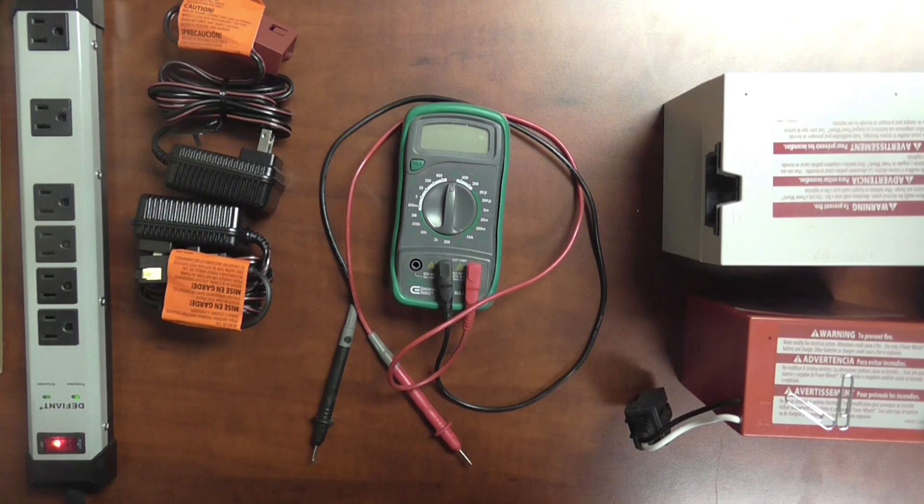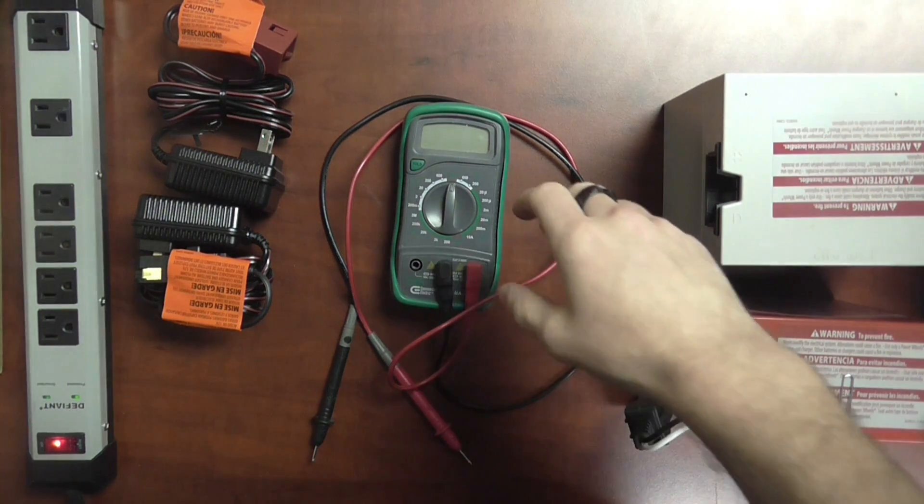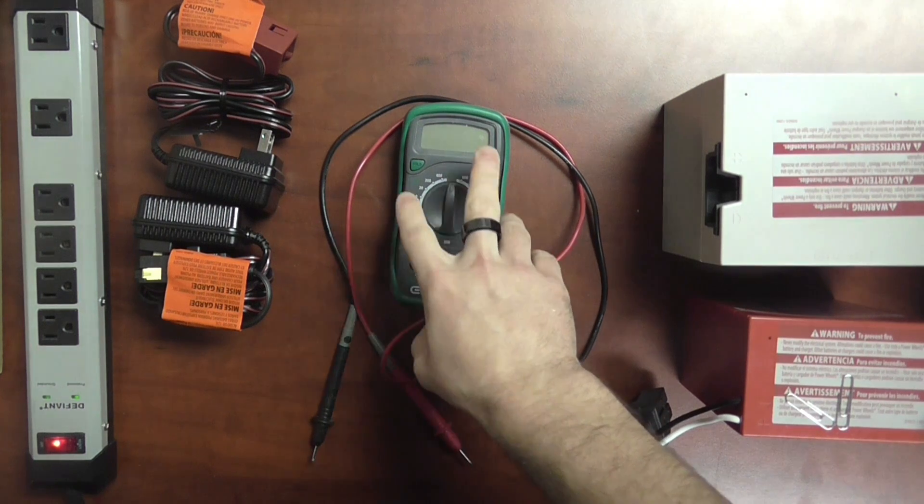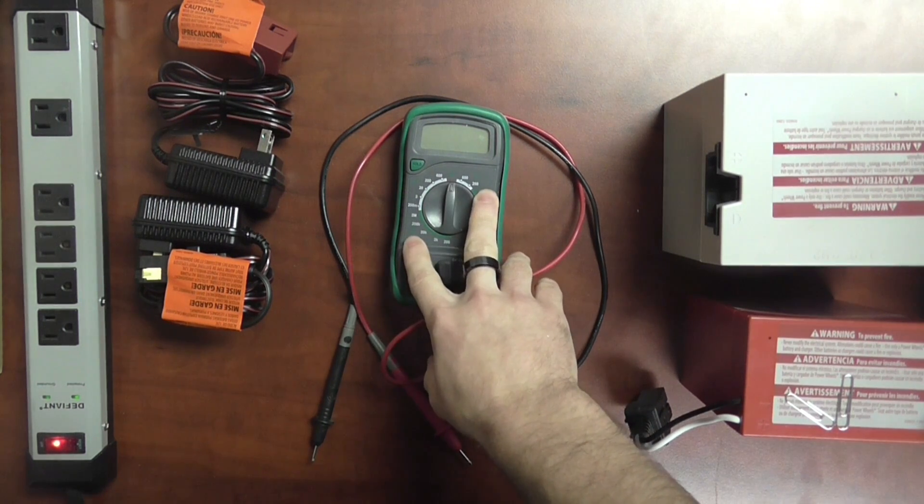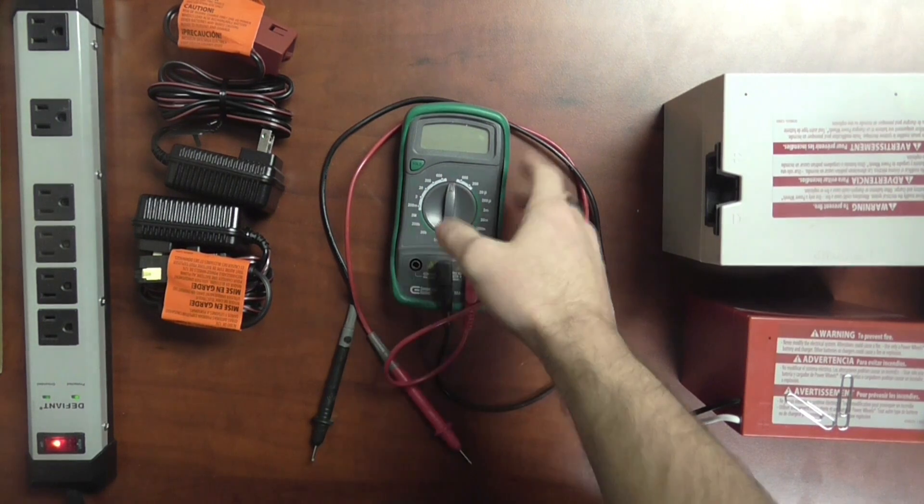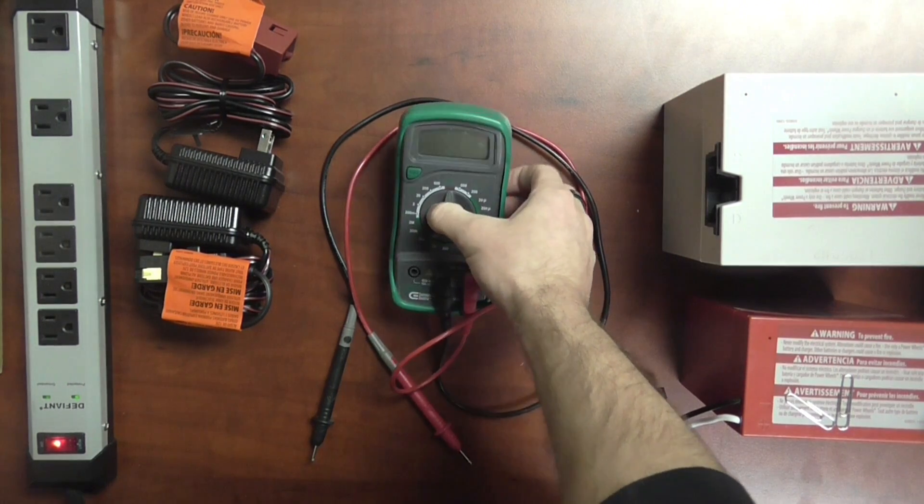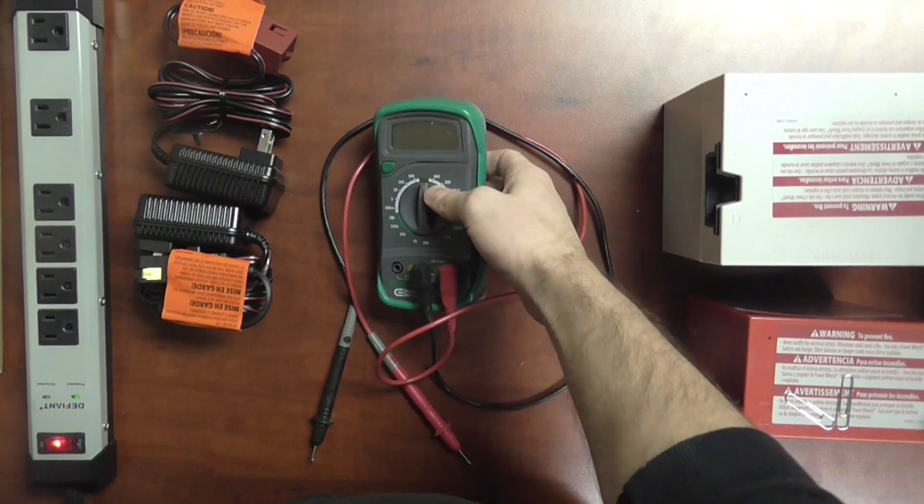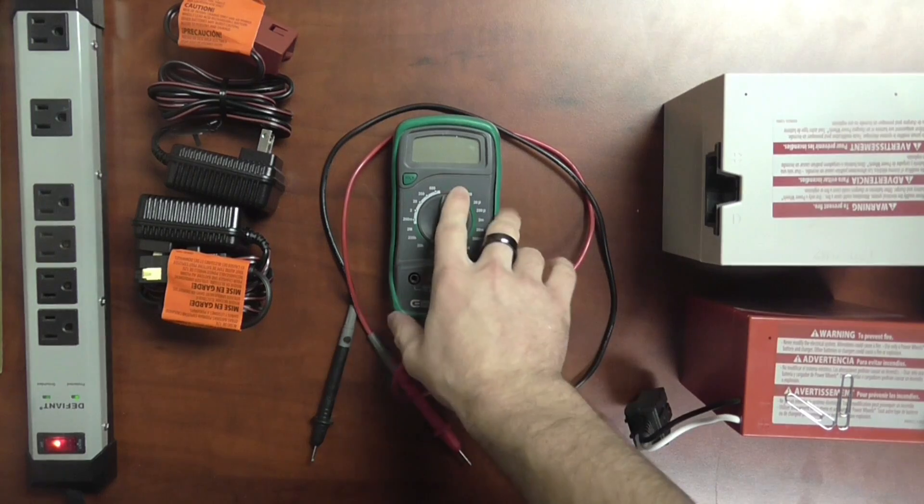So the first thing you're going to need, really the only tool you're going to need for this, is a voltmeter. Voltmeters are pretty common. If you don't have one at your house, I'm sure a neighbor or friend has one you can borrow. If not, you can pick them up at Home Depot or the local hardware store. They're usually around $10 to $15. There's no need to go expensive with these.